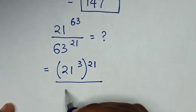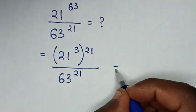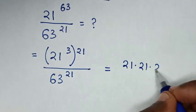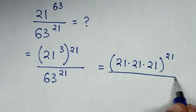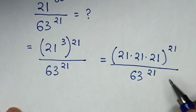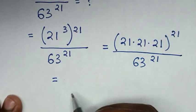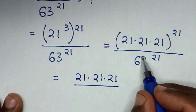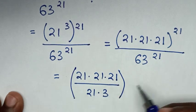Then it will be equal to 21 power of 3 — same as 21 times 21 times 21 — then bracket power of 21, then over this exponent 63. Now in here we have same power of 21, so it will be equal to 21 times 21 times 21 over 63 — which is same as 21 times 3 — then bracket same power of 21.